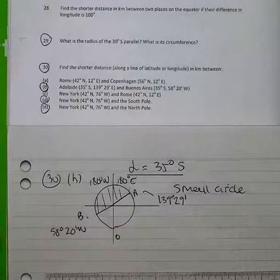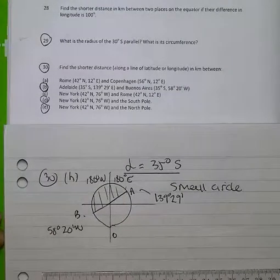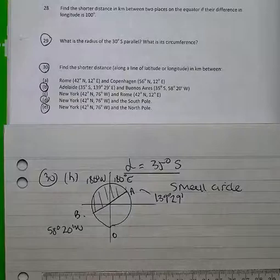Question 30, you're asked to find the shorter of the two distances, line of latitude or longitude in each case.